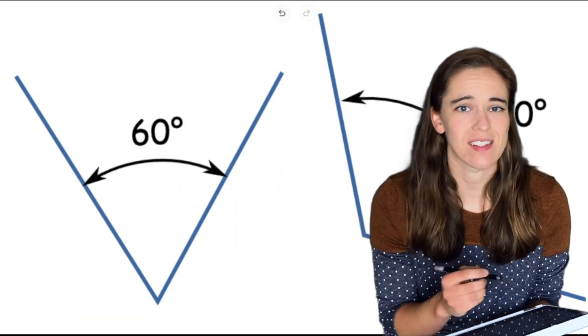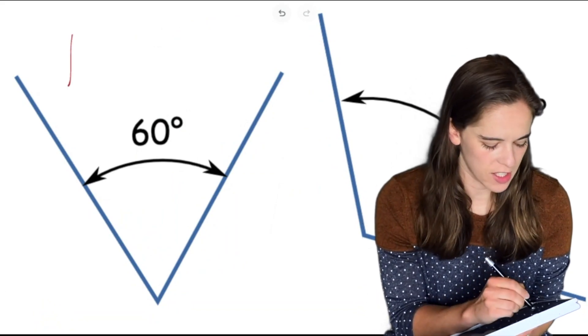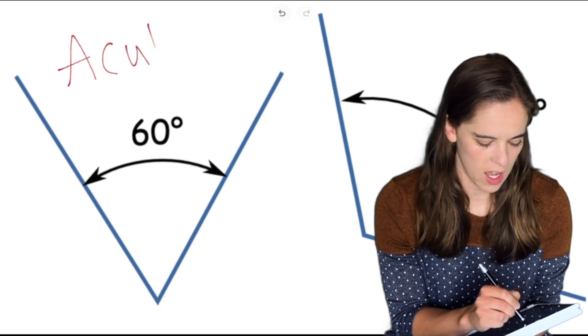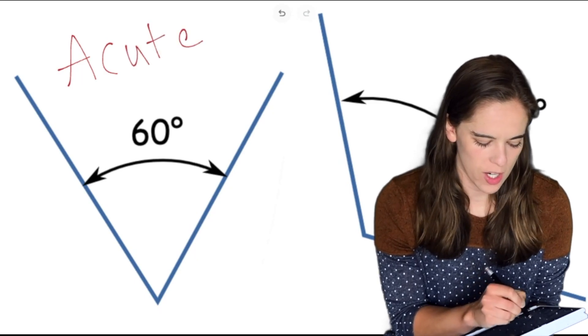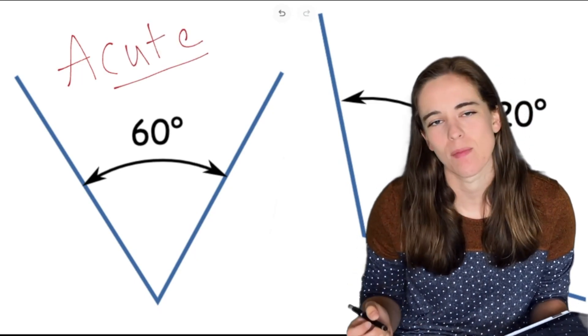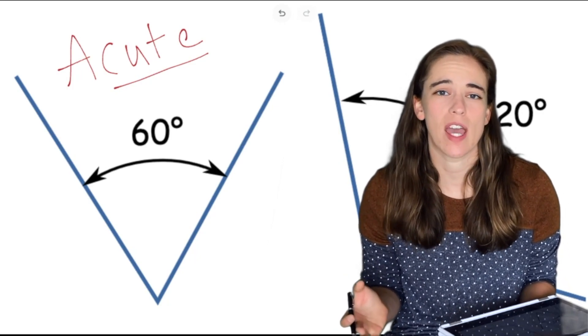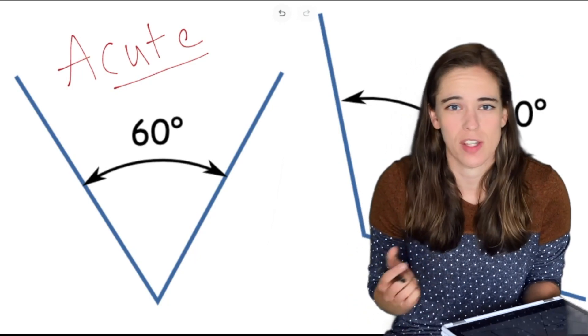Any angle that is less than 90 degrees we consider to be an acute angle. You might notice it has the word cute in there. Some people like to remember acute angles as being little because little things are always cute.